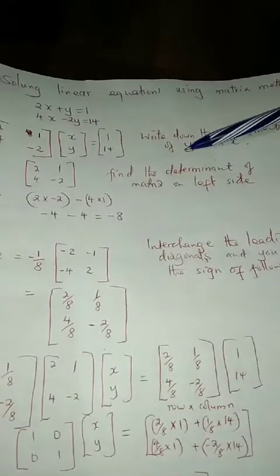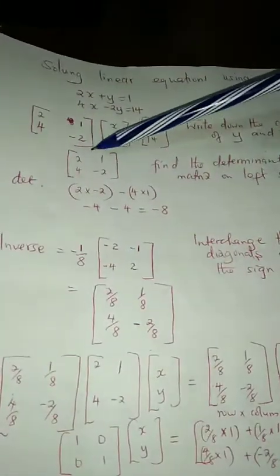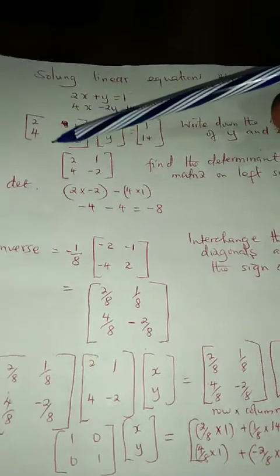So the first step there: write down the coefficients of y and x. The next step you get the determinant of the matrix on your left.